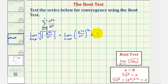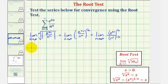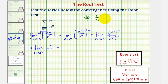So this is equivalent to the limit as n approaches infinity of e raised to the power of two n times one over n. We have powers to a power, so we multiply. This gives us the limit as n approaches infinity of e raised to the power of two n times one over n. Well, two n times one over n would be two n over n, or just two.